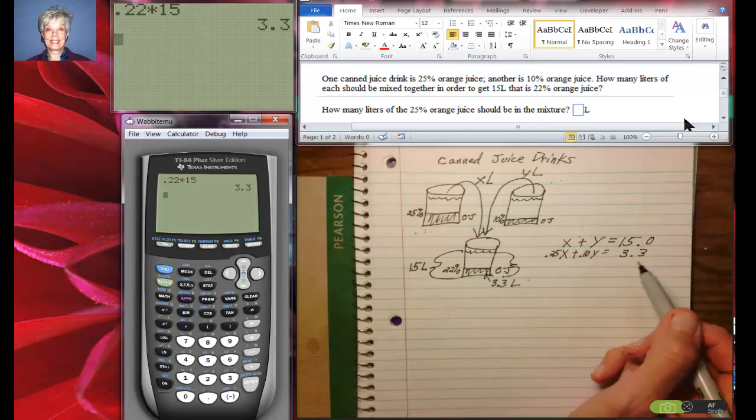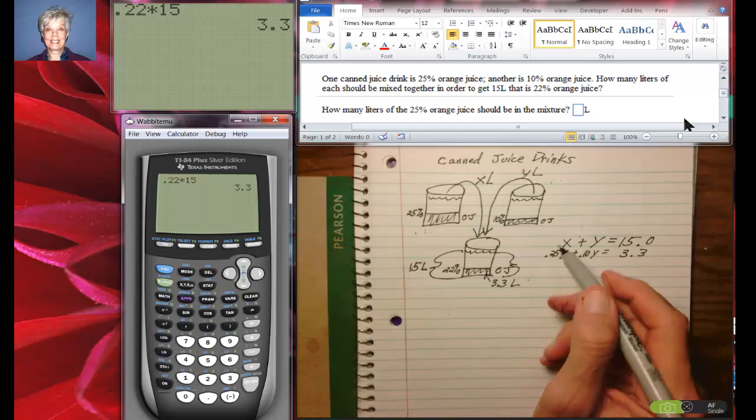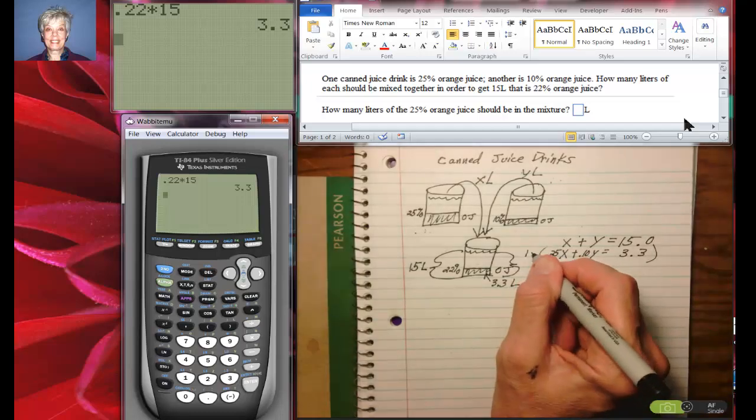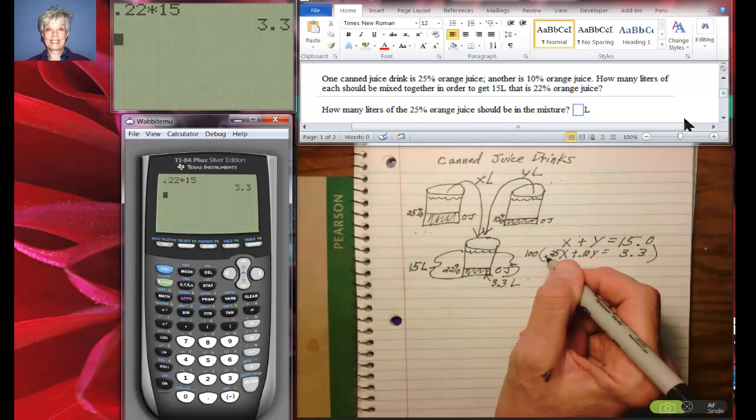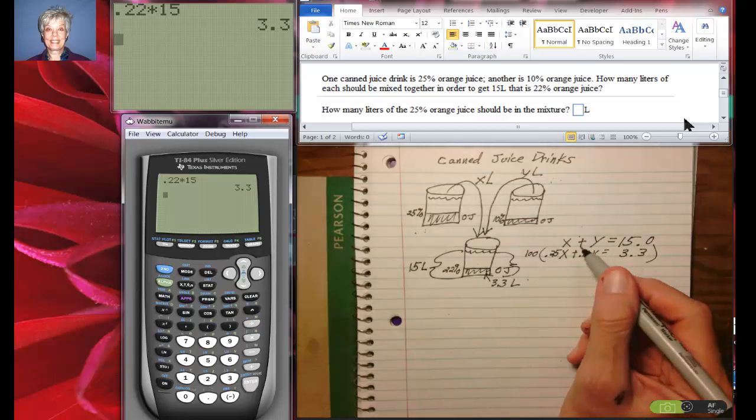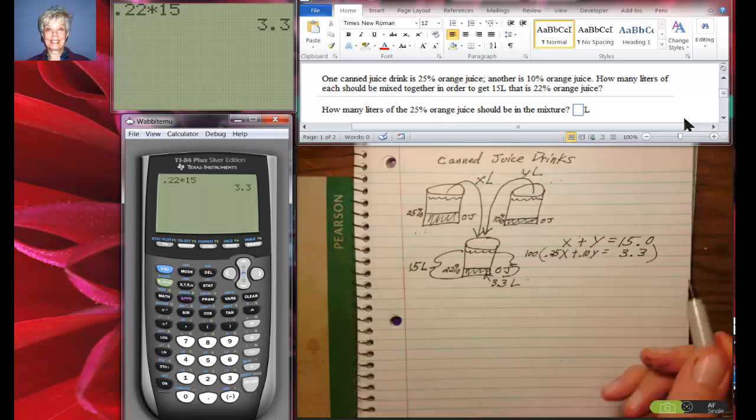I have decimals here, so I'm going to multiply this equation by 100 in order to move the decimal points over two places. At the moment, I'm not going to do anything to the first equation.